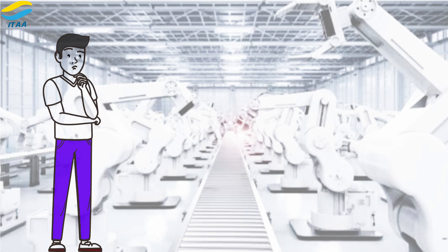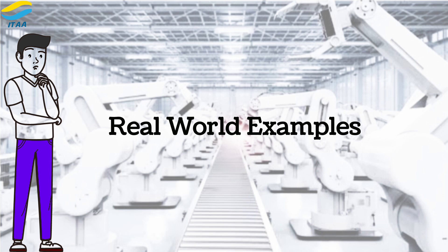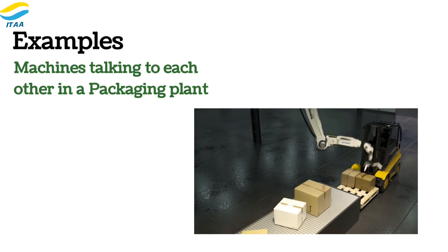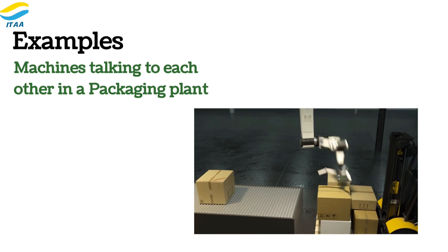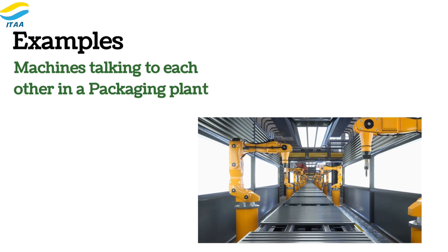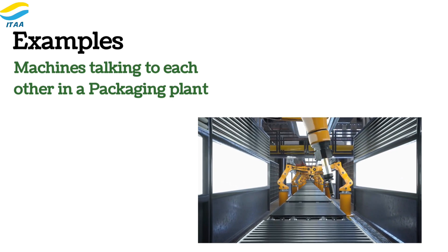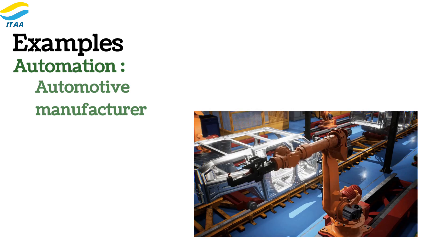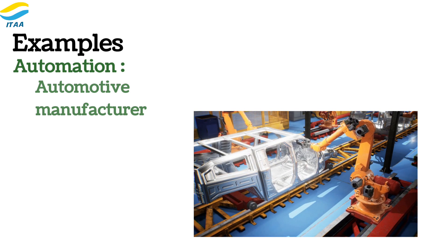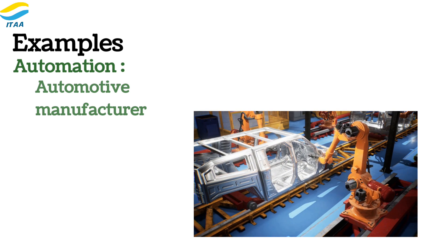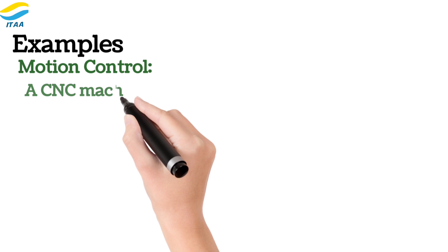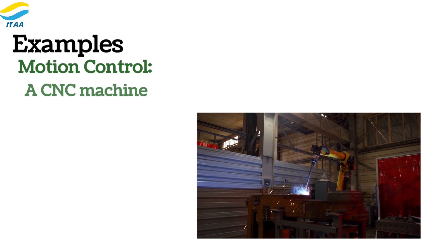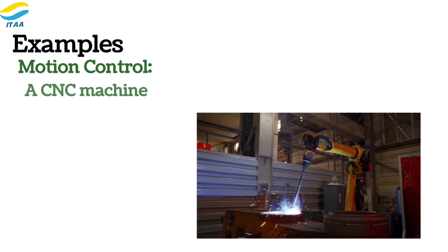Let's explore real-world examples where PROFINET is making industries smarter and more efficient. In a packaging plant, PROFINET connects packaging machines, allowing them to communicate and sync their actions. If one machine detects a faulty package, it signals others to halt production, minimizing wasted materials and downtime. An automotive manufacturer uses PROFINET to automate its assembly line, connecting robots, welding machines, and inspection systems, resulting in faster, more precise car production. In motion control, a CNC machine tool uses PROFINET to synchronize its axes, enabling precise cutting of complex shapes and ensuring smooth, accurate motion control.